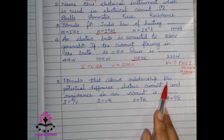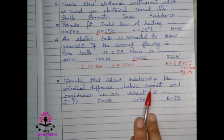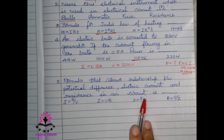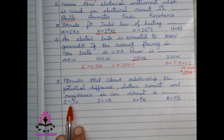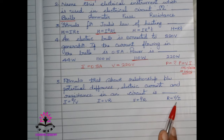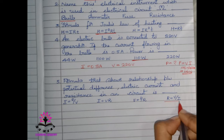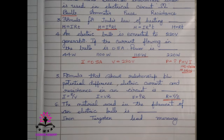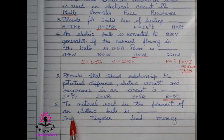Next question: the formula that shows the relationship between potential difference, electric current, and resistance in a circuit is dash. Options: I = R/V, I = VR, V = 1/R, and R = V/I. The answer is R = V/I.